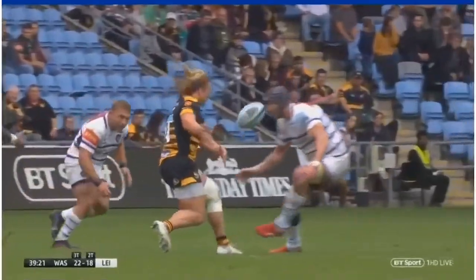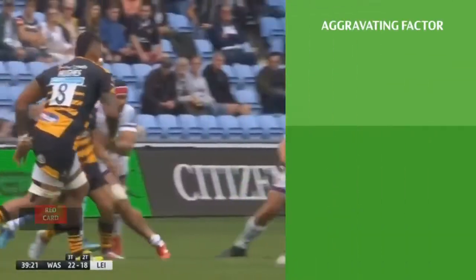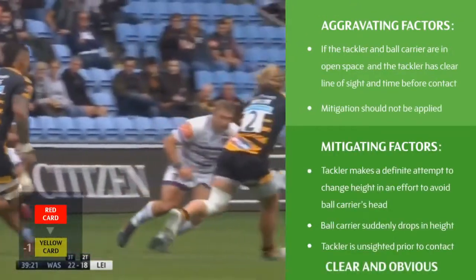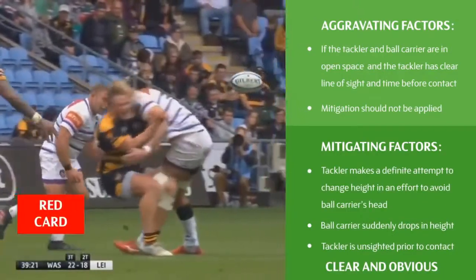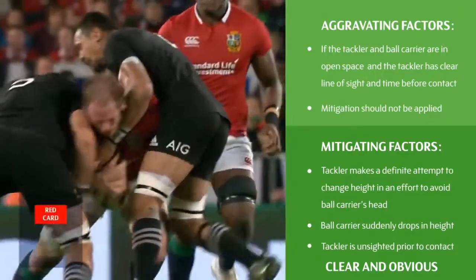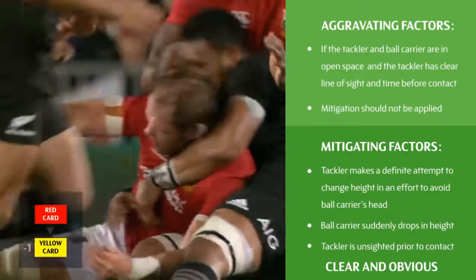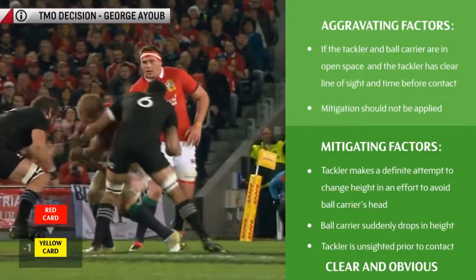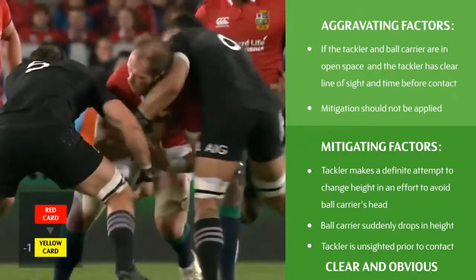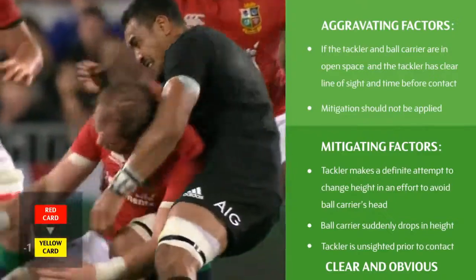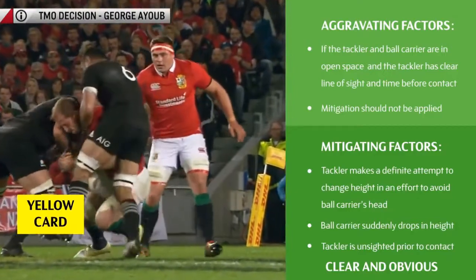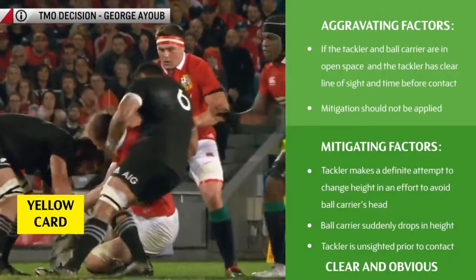Once initial decisions have been made, the match officials must then ask whether there are clear and obvious aggravating or mitigating factors. In this example, there are no clear or obvious mitigating factors, therefore the initial decision of a red card remains. Here, the ball carrier has ducked and is running in a low, crouched position immediately before contact to the head occurs. The tackler may be considered to be aiming low enough to avoid the head, and the officials may find this sufficient mitigation to reduce the sanction from a red card to a yellow card.